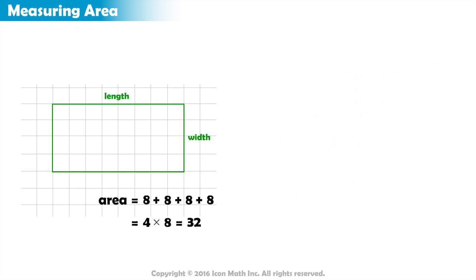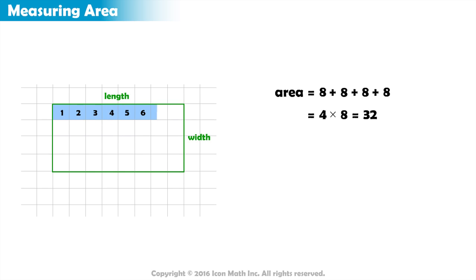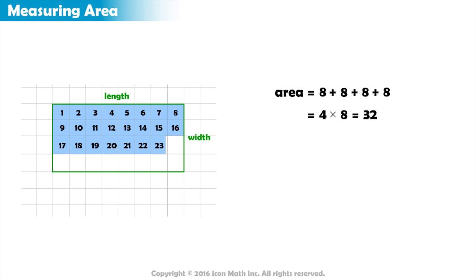We can make sure of our answer by counting the number of unit squares one by one. And we're right — 32 unit squares in total cover the rectangle.